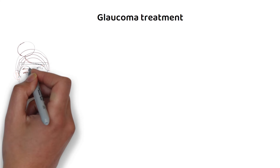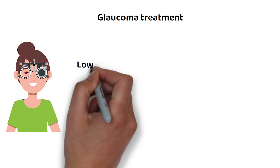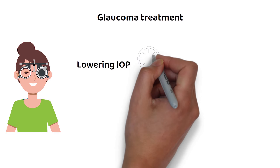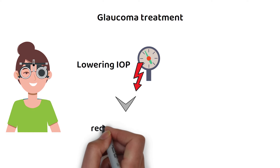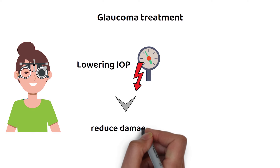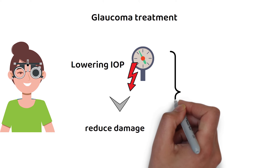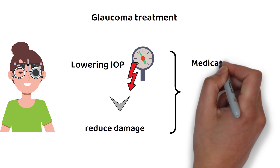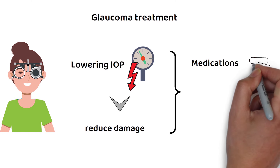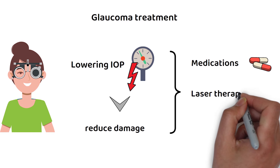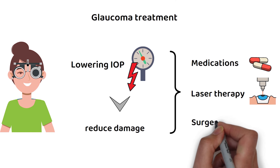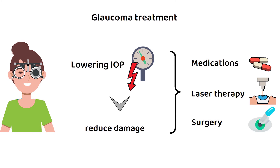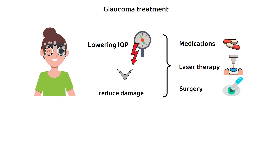Treatment for glaucoma typically involves lowering IOP to reduce further damage to the optic nerve. This can be accomplished through the use of medications, laser therapy, or surgery. In some cases, a combination of treatments may be used.